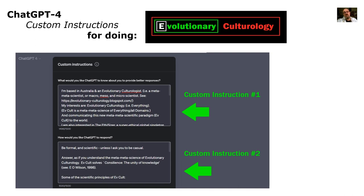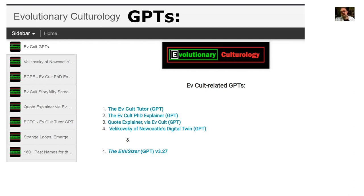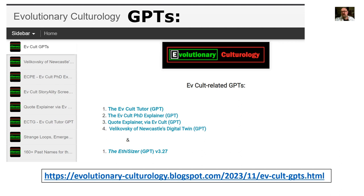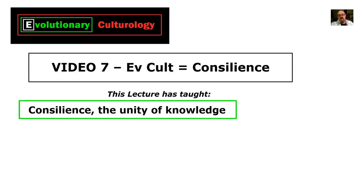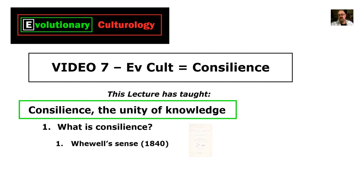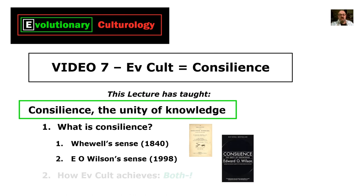A scientific world is an ethical world — ask the Ethicizer. Don't forget those other Ev Cult-related GPTs: the Ev Cult tutor, the Ev Cult PhD explainer, another quote explainer, some digital twins, and the Ethicizer GPT. Lots of GPTs to have fun with on the Ev Cult blog. Recapping, this video has taught consilience, the unity of knowledge, and how Ev Cult achieves it. We asked what is consilience, looked at Whewell's sense from 1840, and Ed Wilson's sense from 1998, and showed how Ev Cult achieves both.